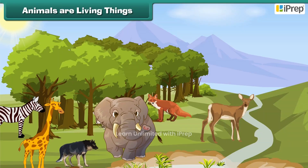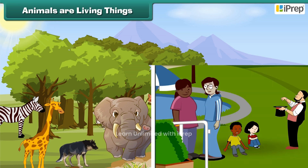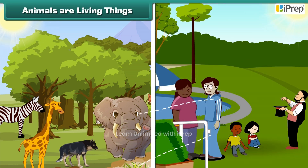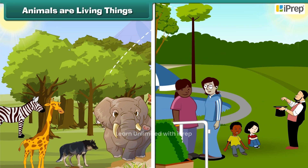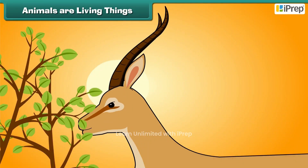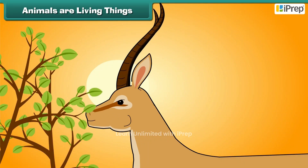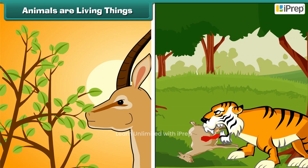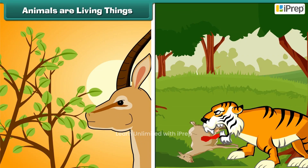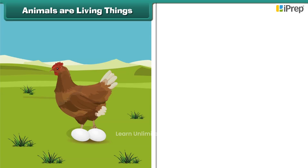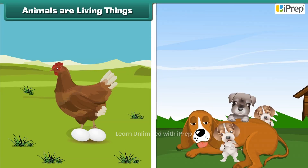Animals are living things like human beings. Like us, they need air, water, and sunlight to live. They get their food from plants and other animals. They grow, lay eggs, and produce babies.